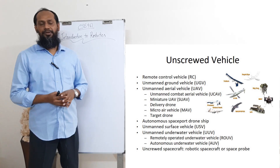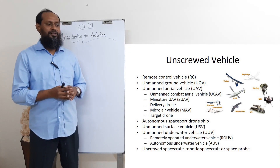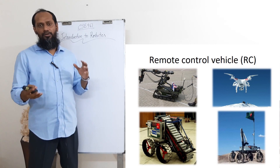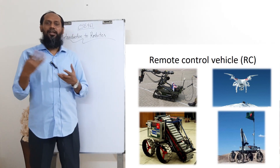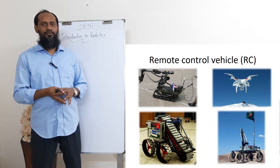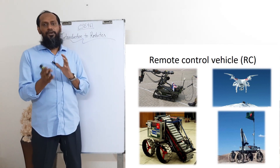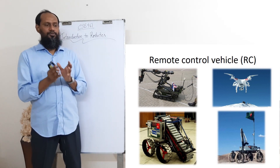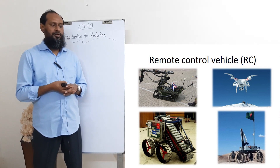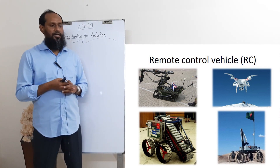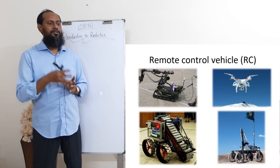In Wikipedia they are saying uncrewed vehicle. One is remote control vehicle, or you always say RC car, RC plane, RC quadcopter. These are the uncrewed remote control vehicles — we say RC, radio controlled, or radio frequency controlled, or remote control vehicle.